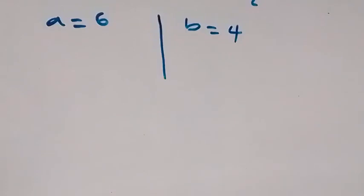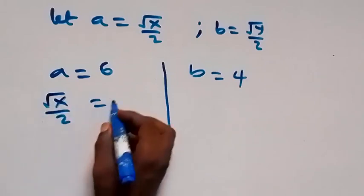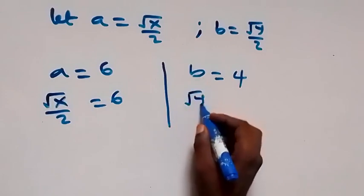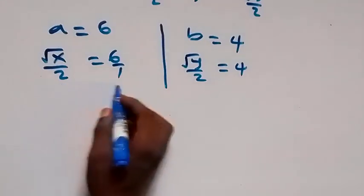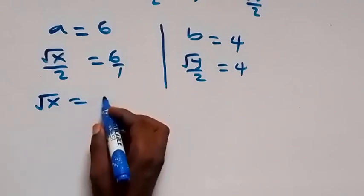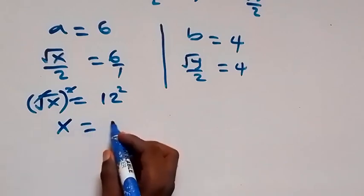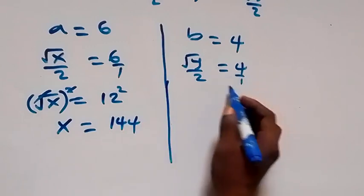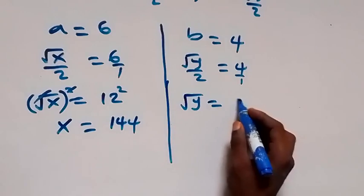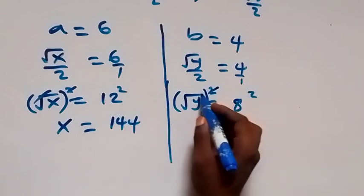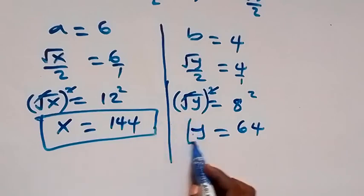We have a equals 6 and b equals 4. Since we let a equal root x over 2, we have root x over 2 equals 6, so root x equals 12. Squaring both sides gives x equals 144. Since b equals root y over 2 equals 4, cross-multiplying gives root y equals 8. Squaring both sides gives y equals 64. Therefore, x equals 144 and y equals 64.